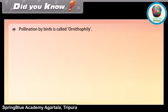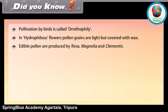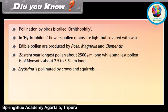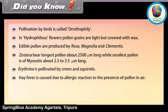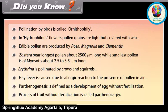Did you know? Pollination by birds is called ornithophily. In hydrophilous flowers, pollen grains are light but covered with wax. Edible pollen are produced by Rosa, Magnolia, and Clematis. Zostera bears the longest pollen — about 2500 mm long — while the smallest pollen is of Myosotis, about 2.5–3.5 mm long. Erythrina is pollinated by crows and squirrels. Hay fever is caused due to an allergic reaction to pollen in the air. Parthenogenesis is defined as the development of an egg without fertilization; the process of fruit formation without fertilization is called parthenocarpy.